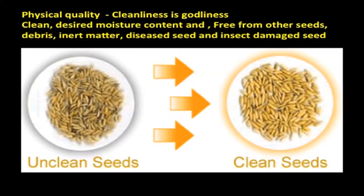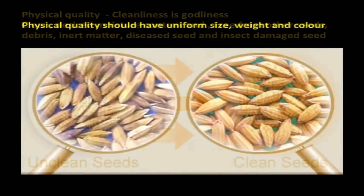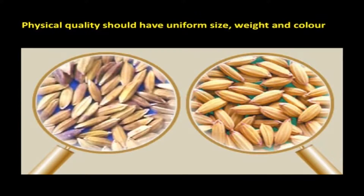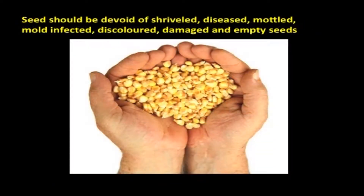The first quality character is physical quality. A seed that is clean, has desired moisture content, and is free from other seeds, debris, inert matter, diseased seed, and insect-damaged seed is said to be of high physical quality. The seed with physical quality should have uniform size, weight, and color. It must be shiny and appealing to the buyer. The color must be normal and not bleached. It should be devoid of shriveled, diseased, mottled, mold-infected, discolored, damaged, and empty seeds.